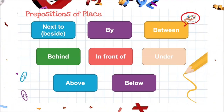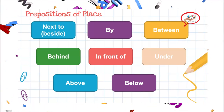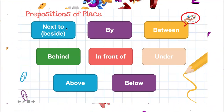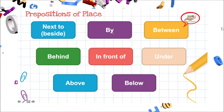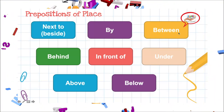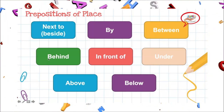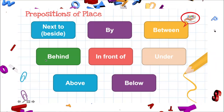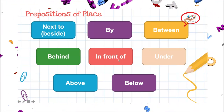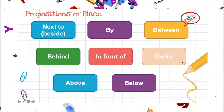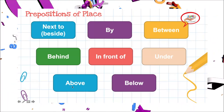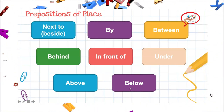Let's do it one more time. Hagámoslo una vez más para que te quede muy bien la pronunciación. Next to. By. Between. Behind. In front of. Under. Above. Below.